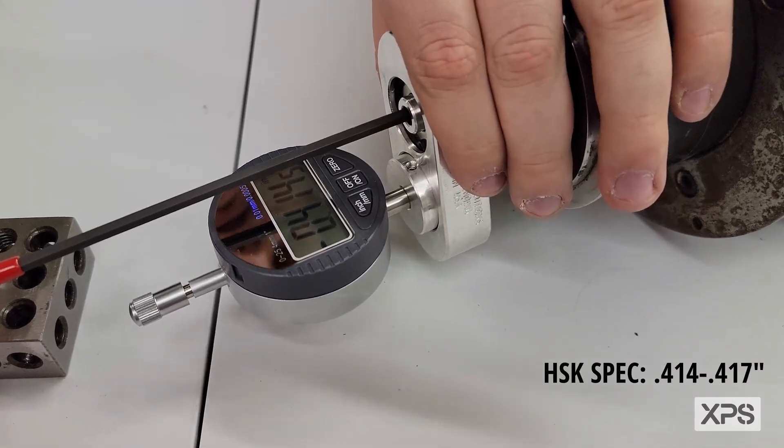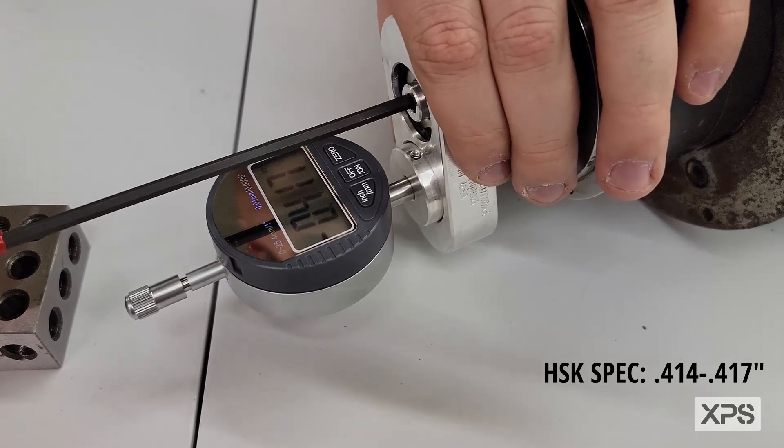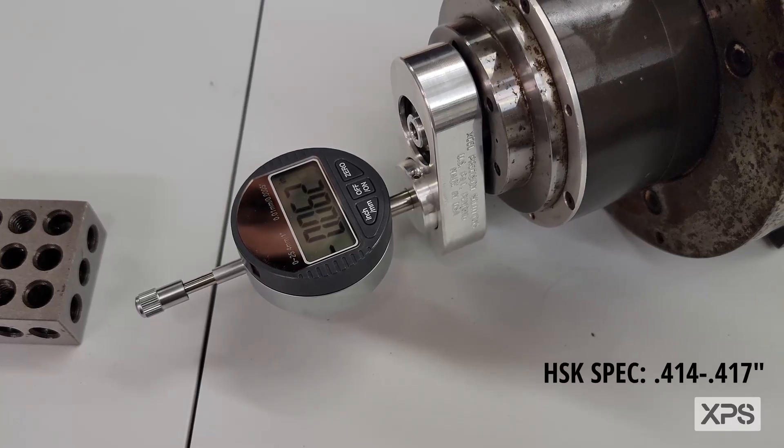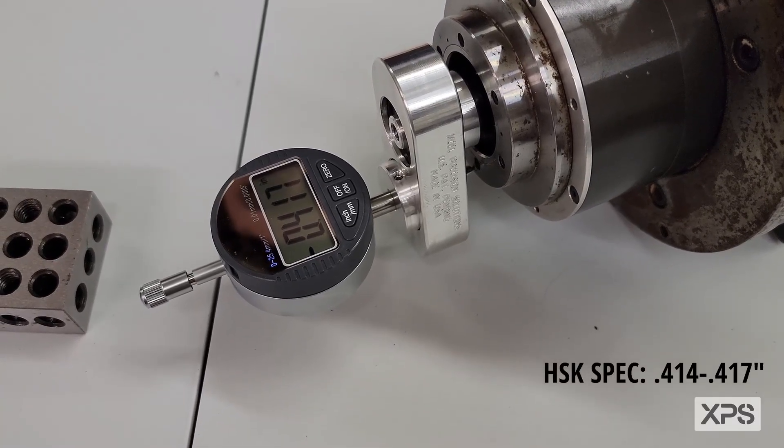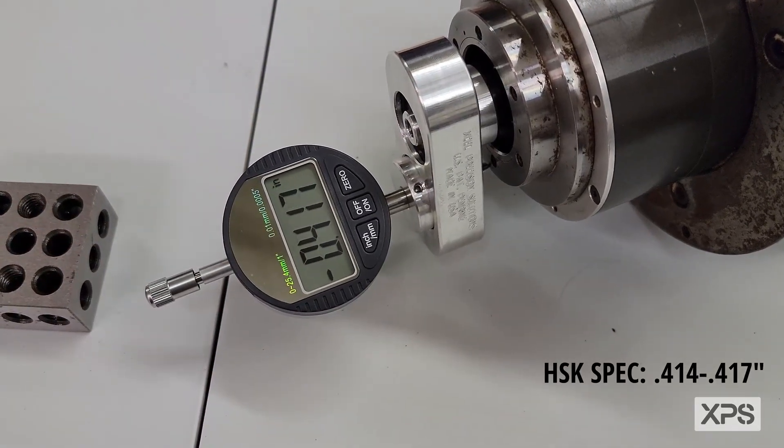and now bring it to the adjustment you need. Let's do 415 thousandths. Now insure it again. Now we're at 417 thousandths.